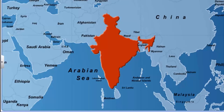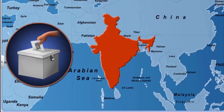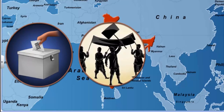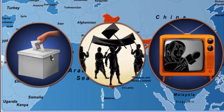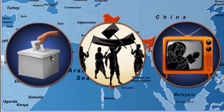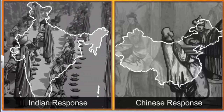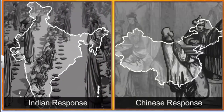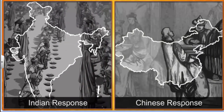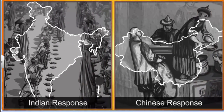India, being a democracy, had multi-party elections, an opposition party looking over the government's shoulder, and a press free to criticize the government. Therefore, the Indian government responded to the food scarcity in a manner very different from that of the Chinese government.